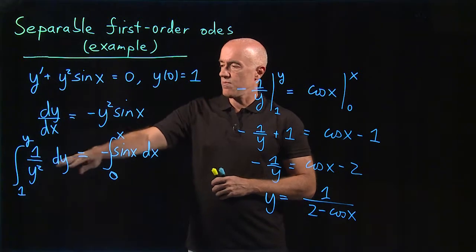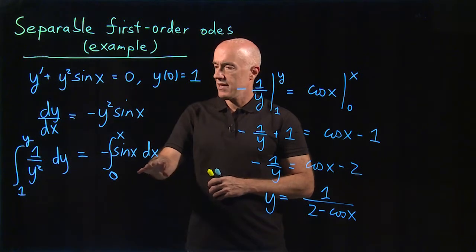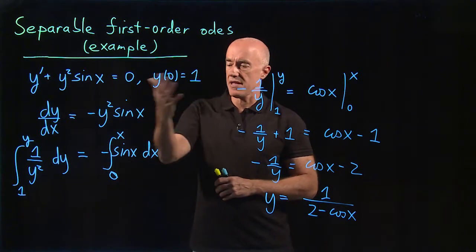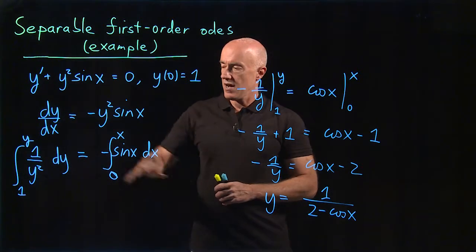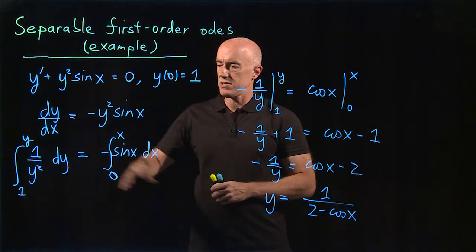We divide through by y², multiply by dx, and then integrate. When you integrate, you apply the initial conditions and put limits on the integral. Many times you can actually do the integrals for simple enough equations.